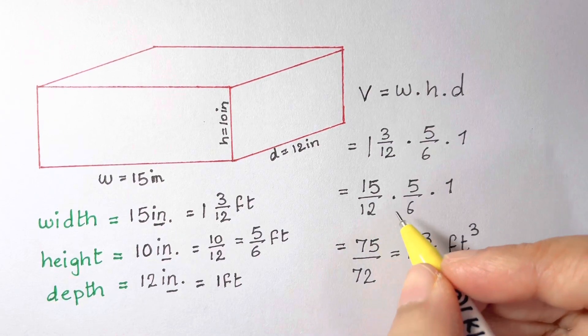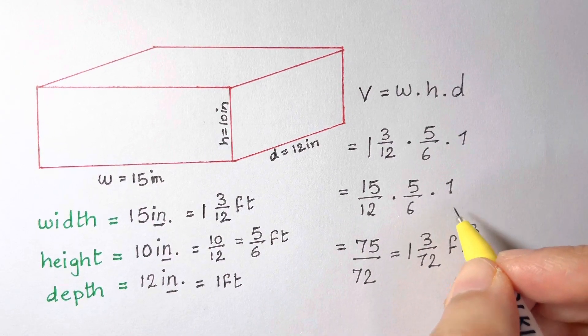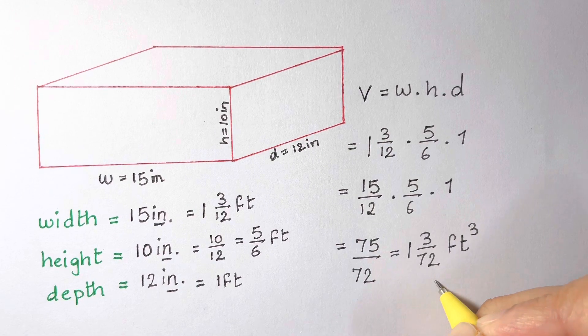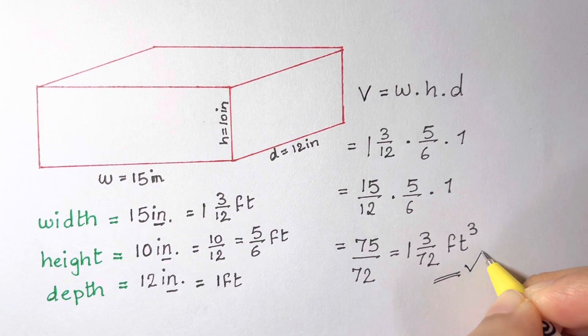Since we are multiplying feet times feet times feet, that's why we are getting feet to the third power, read as cubic feet.